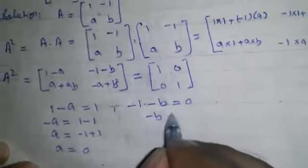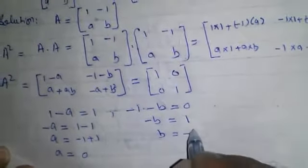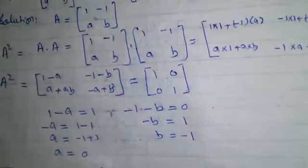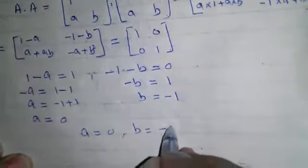Minus b is equal to 1, and b is equal to minus 1. So a is equal to 0, b is equal to minus 1.